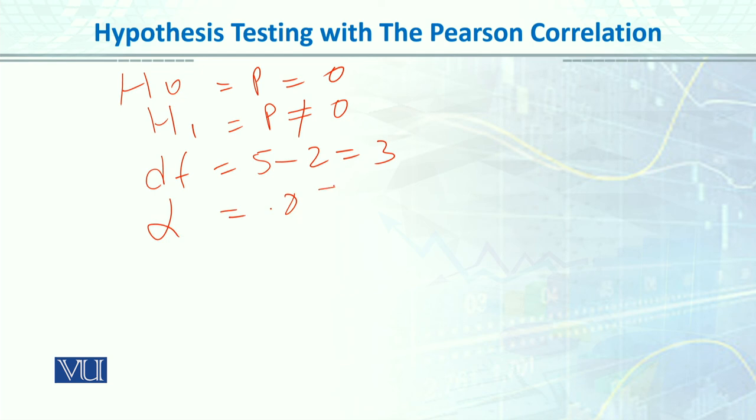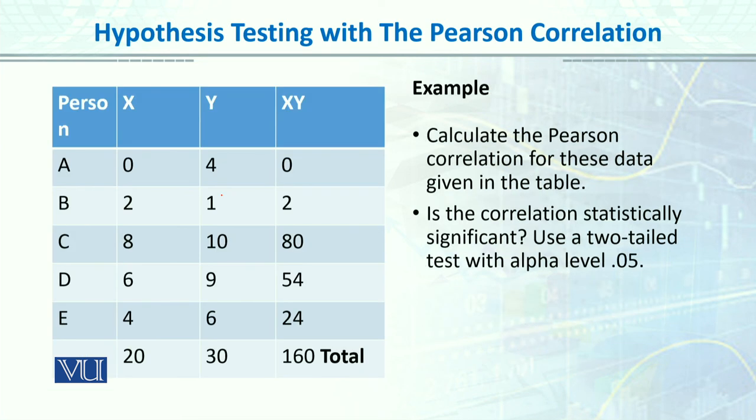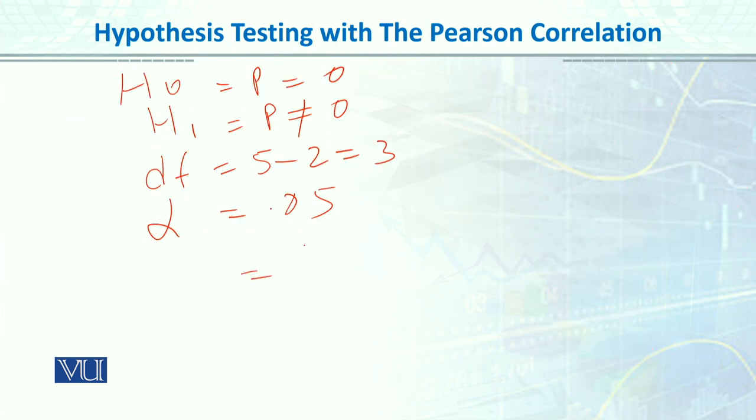Let's go back to the table and see what our value is. For degrees of freedom 3, two-tail test, the critical value at alpha 0.05 is 0.87. Our calculated value r is 0.86. So 0.86 is smaller than the critical value 0.87.